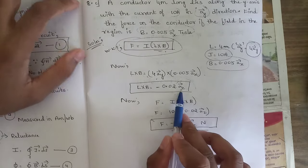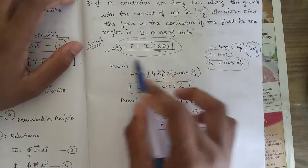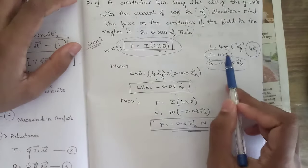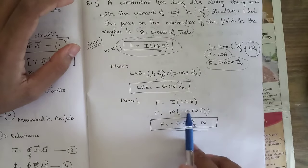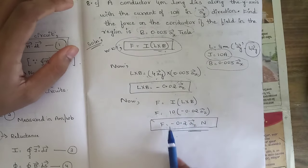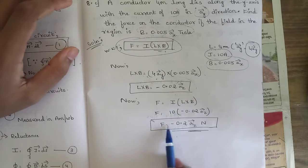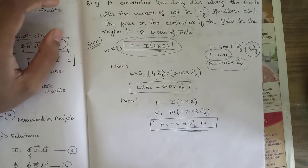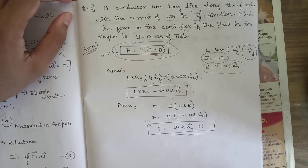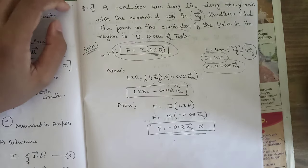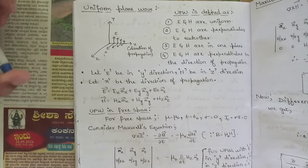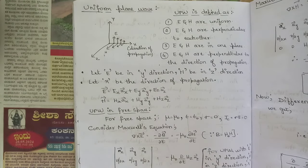0.005 times 4 is 0.02, so the value of L cross B is minus 0.02 az. Substituting back: F equals I times L cross B equals 10 times minus 0.02 az. Therefore the final value of force is minus 0.2 az newtons. This was a simple question from the model paper carrying around four to five marks. Please note it down.